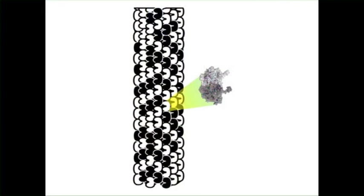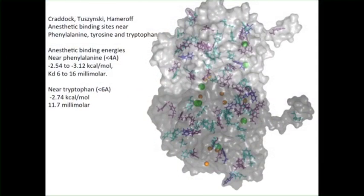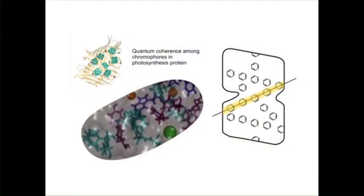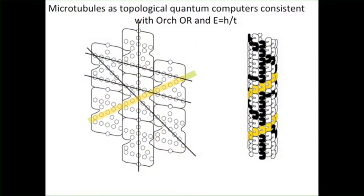Let me elaborate on zooming in on tubulin. The hydrophobic pockets are actually linear grooves of aromatic rings. This is work by Travis Craddock, Jack Tuszynski, and myself looking at anesthetic binding sites near aromatic rings — phenylalanine, tyrosine, and tryptophan. In green are the anesthetic binding sites and in brown are low affinity binding sites. They're very close to these hydrophobic grooves in the tubulin. Significantly, they line up — very similar to the quantum effects seen in photosynthesis, where you have chromophores lining up like this, allowing topological quantum computing, which is the most stable form of quantum computing, very resistant to decoherence. The information would be the path that a quantum state takes going around the microtubule.